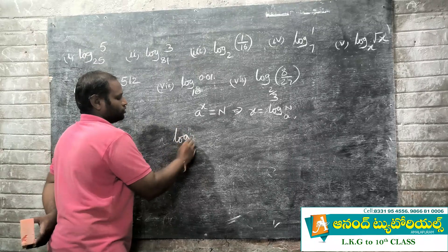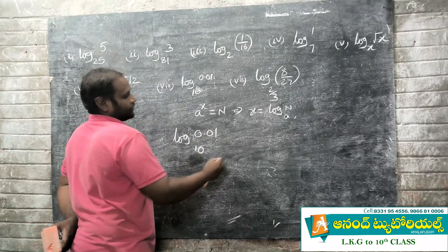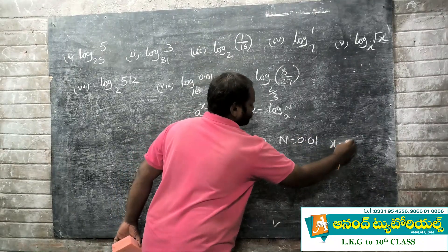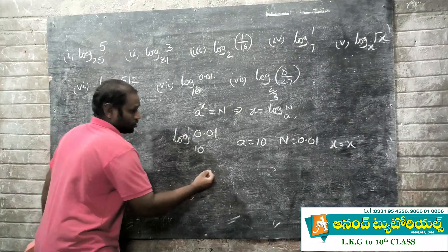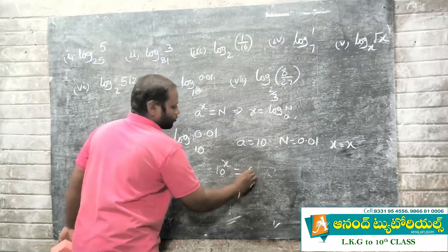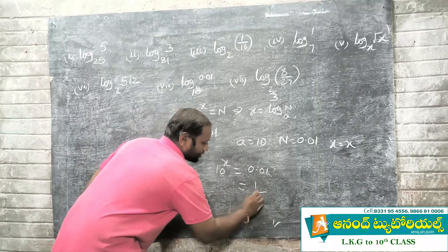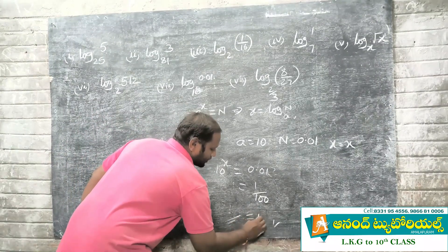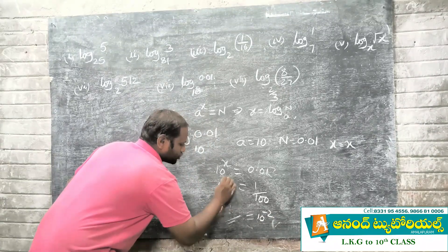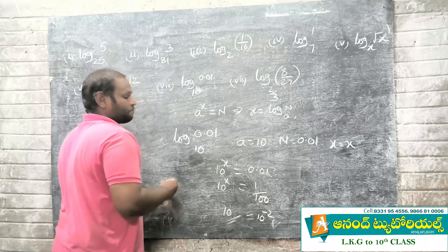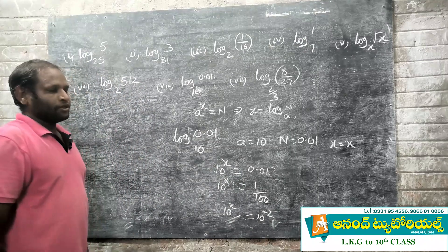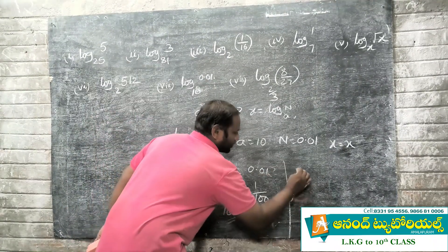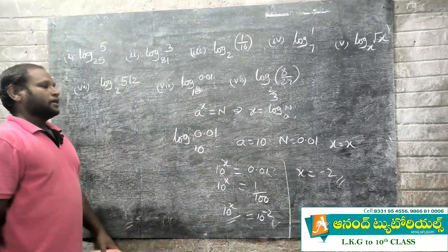Next problem: log base 10 of 0.01 = x. So a = 10, N = 0.01. We write 10^x = 0.01. Now 0.01 = 1/100 = 10^(-2). Using a^(-1) = 1/a, we get 10^x = 10^(-2). Therefore x is equal to -2.